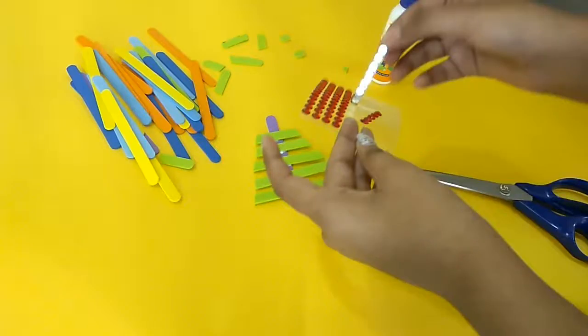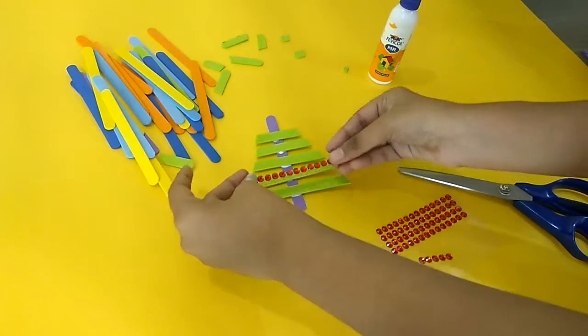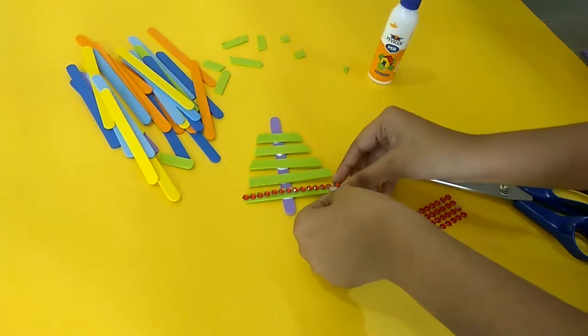Take some sticker stones and put it on the green popsicle, decorate it, and yeah you're done.